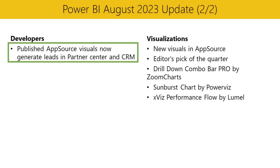In developers, published AppSource visuals now generate leads in Partner Center and CRM. Until recently, your customer leads may have come solely from customers downloading them from AppSource.com. Now you have access to even more leads through Power BI — both the desktop and web embedded AppSource. To access these new leads, simply navigate to the Referrals Workspace in Partner Center, where you can see all leads received from Power BI as well as from AppSource.com, and if you're connected to your CRM, you'll see them there too. By utilizing these new leads, you can potentially reach more customers and grow your business.